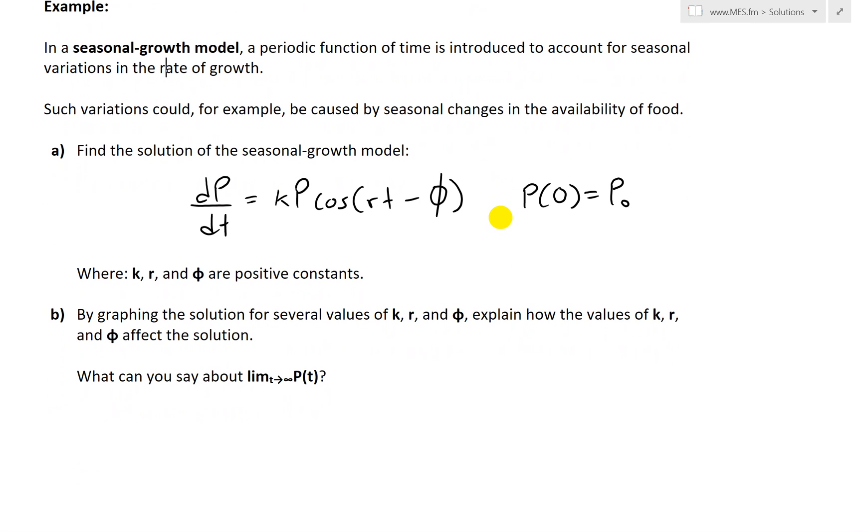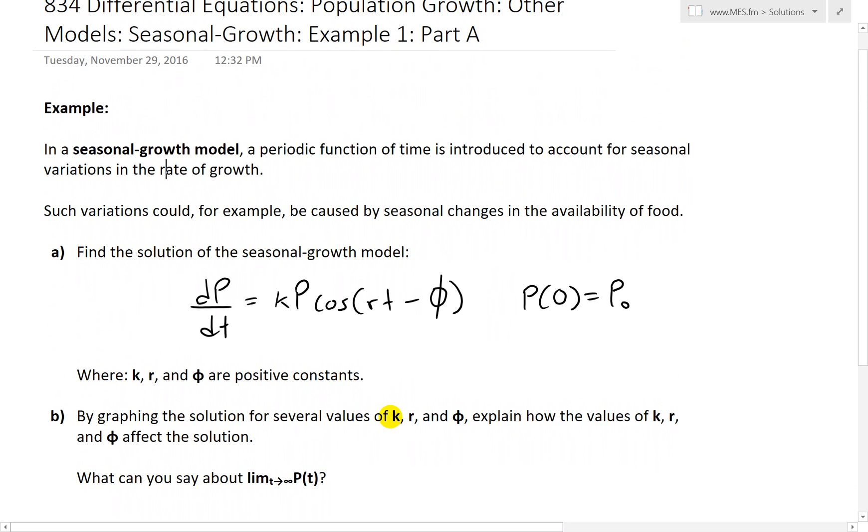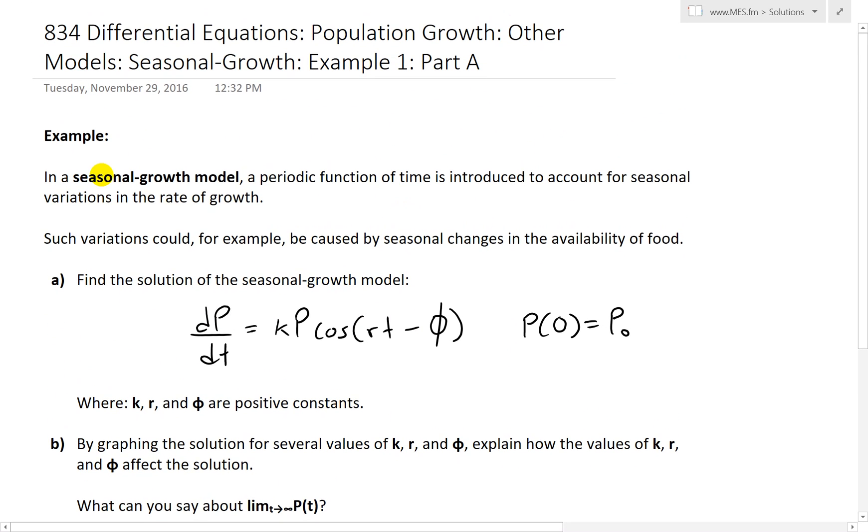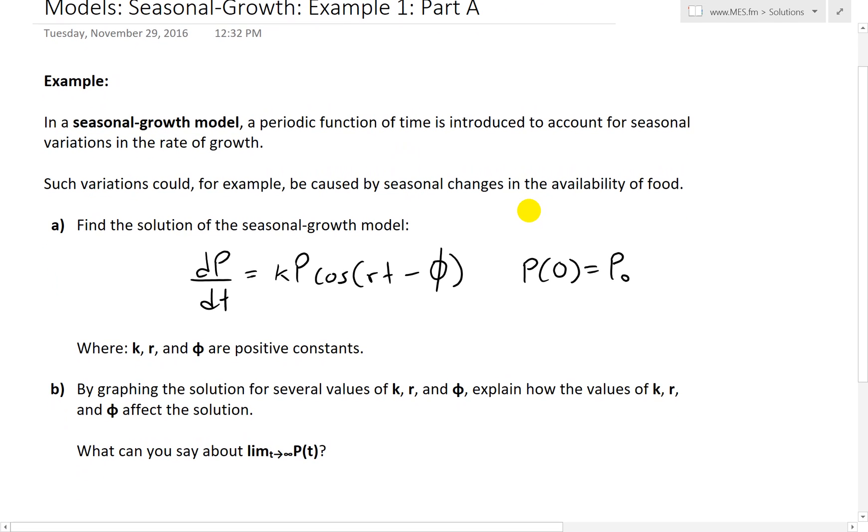And this example is in two parts, parts A and B, and I'll go over part B in the next video, so stay tuned for that. So let's just dive right in. The example states, in a seasonal growth model, a periodic function of time is introduced to account for seasonal variations in the rate of growth. Such variations could, for example, be caused by seasonal changes in the availability of food.